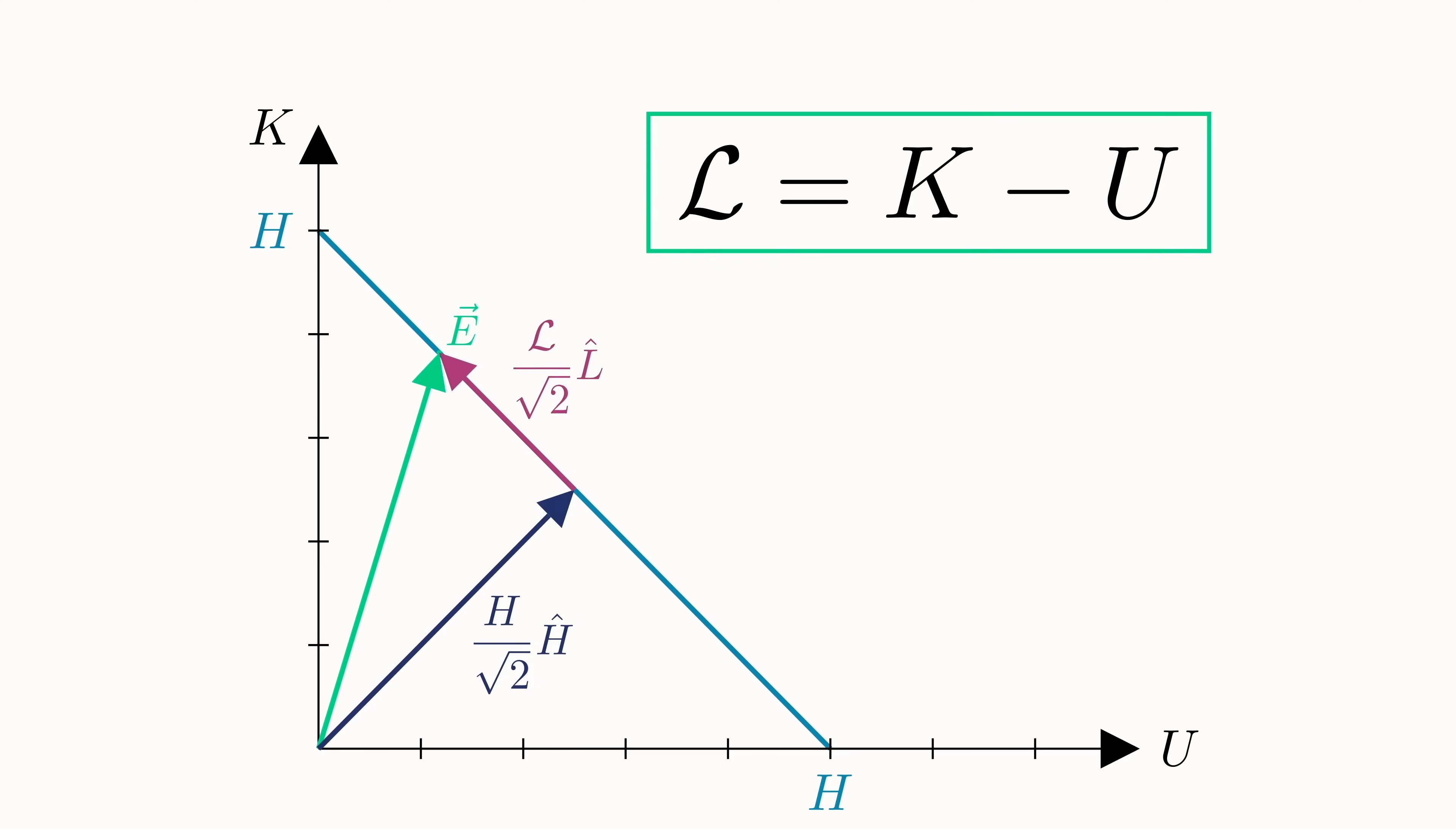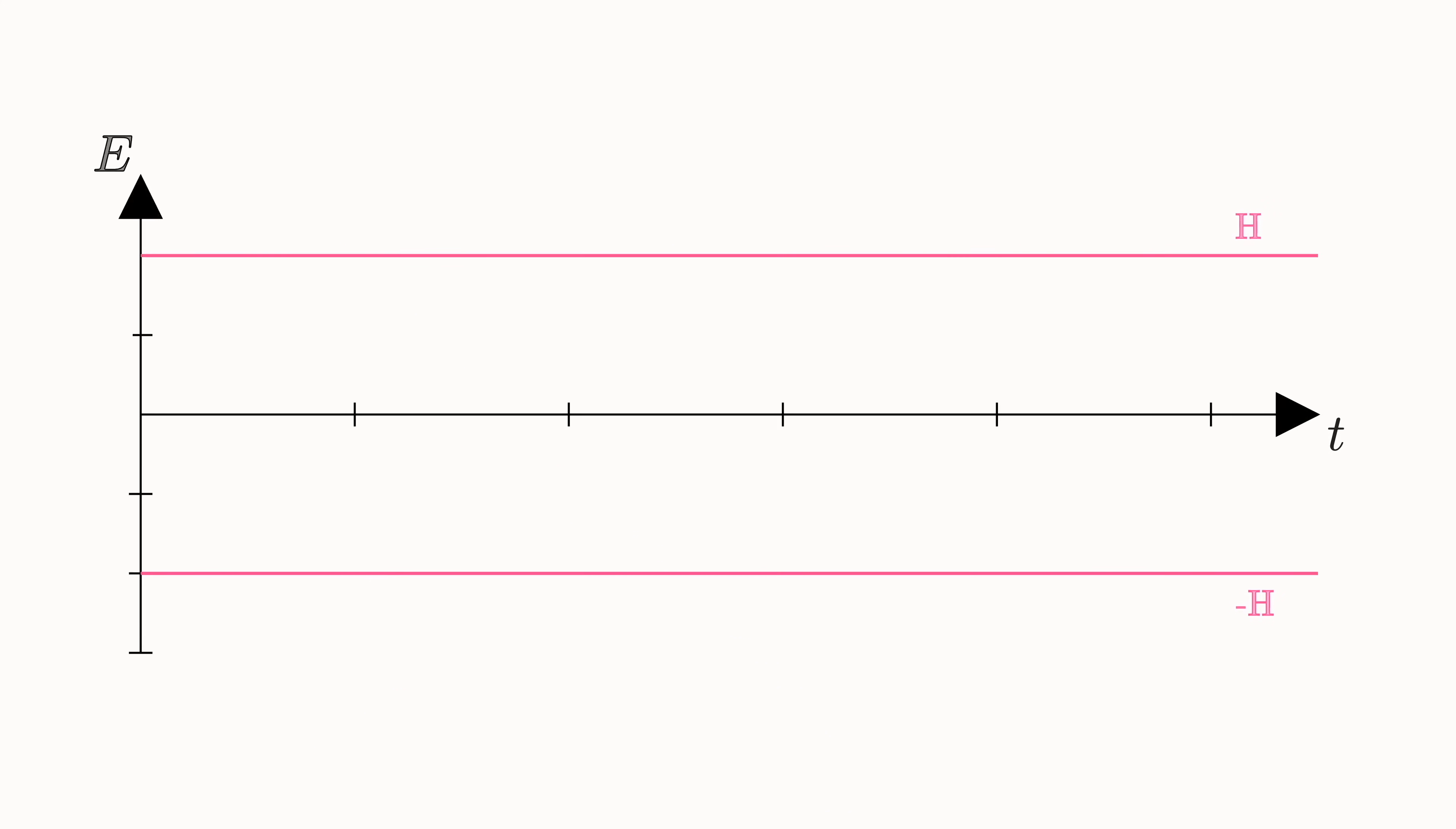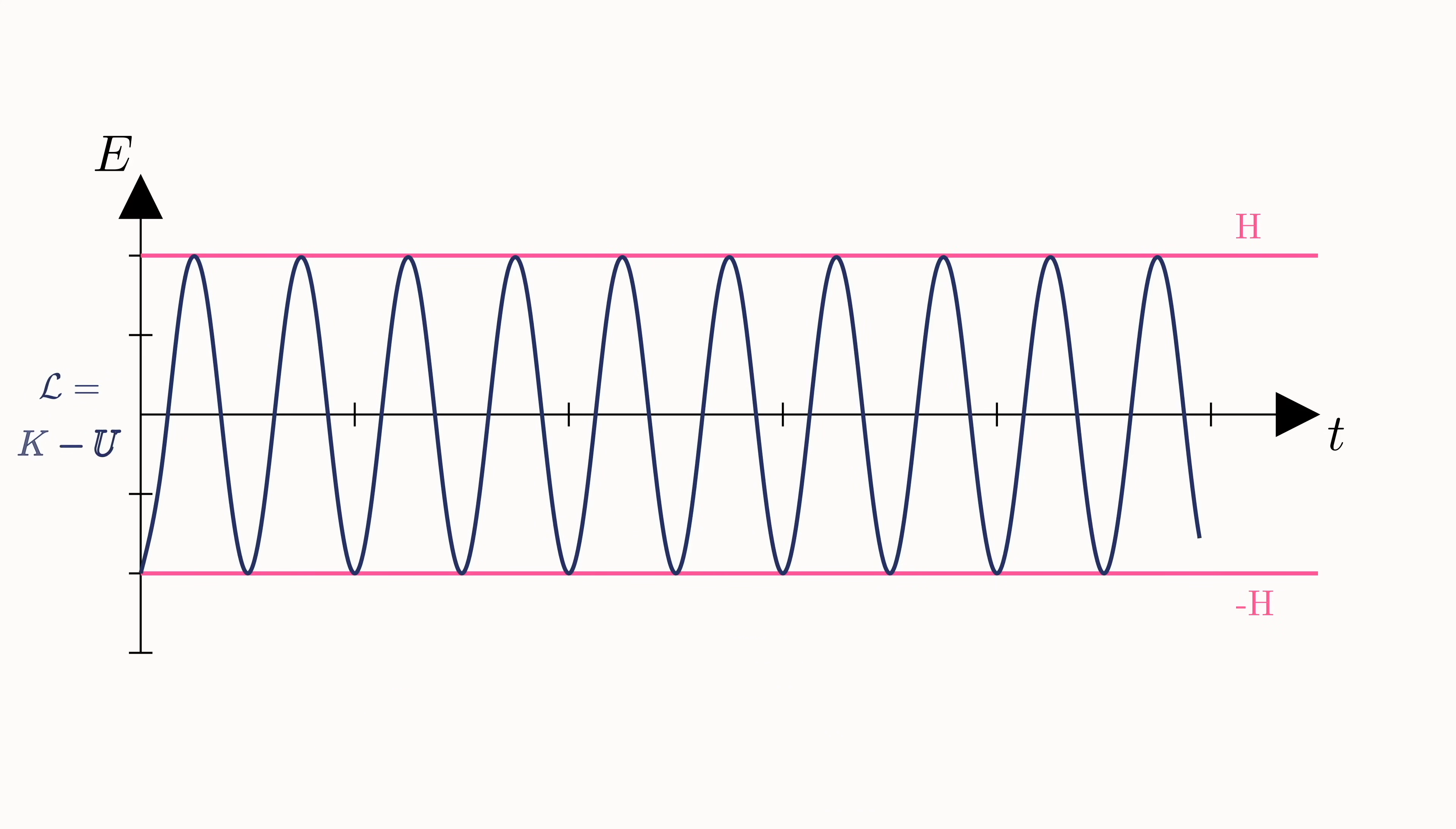So here in energy space, the classical Lagrangian is just the trajectory, or more precisely, apart from the 1 over square root of 2 factor, it's the function that represents the trajectory the mass takes along the line of constant energy. Going back to one of our earlier graphs for the Lagrangian, we can now get an idea for another extremely important physics quantity, the action.